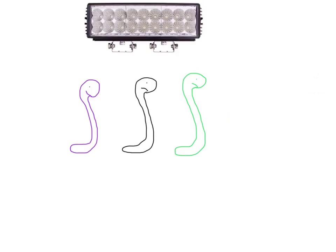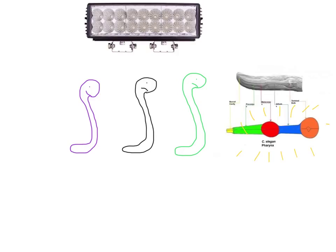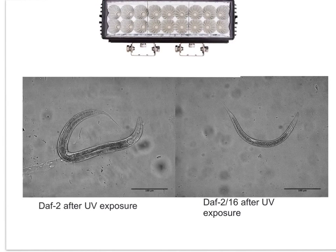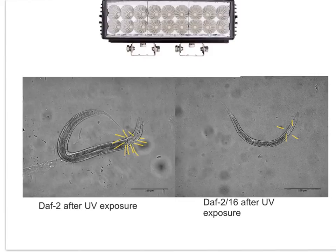We exposed DAF2 mutants, wild-type C. elegans, and the double DAF2-DAF16 mutants, to UV and counted their pharyngeal pumping rates. We hypothesized that the DAF2's pharyngeal pumping rates would be least affected by UV, and the double mutant the most affected, resulting in decreased pumping rates.